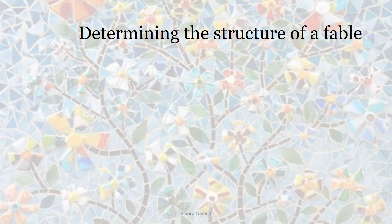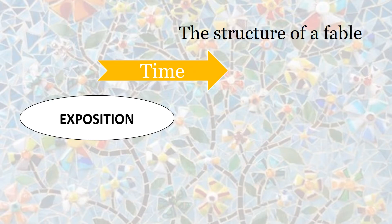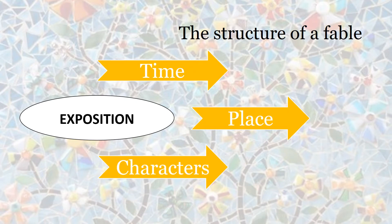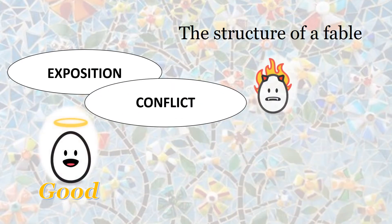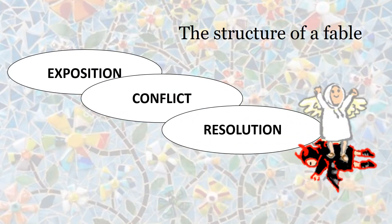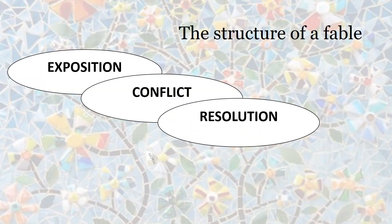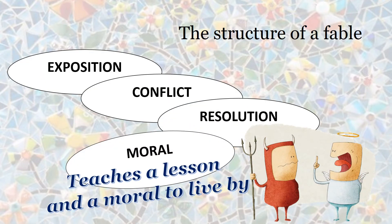We could also determine the structure of a fable. Why is it important? Because later on we will encourage our learners to write their own versions, their own fables. There is the exposition, where usually the author introduces the time, the place, and the characters. The exposition is followed by the conflict, which is usually between good and evil. Then comes the resolution, where good triumphs over evil in the traditional fable. At the end the author writes the moral, which definitely teaches a lesson that readers should live by.